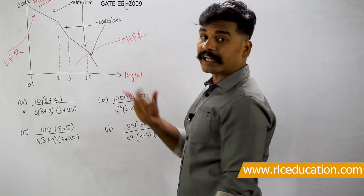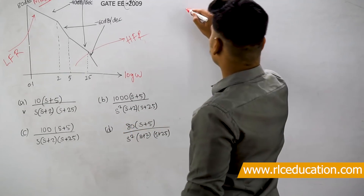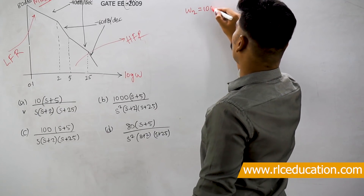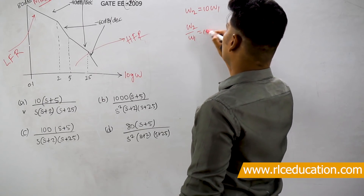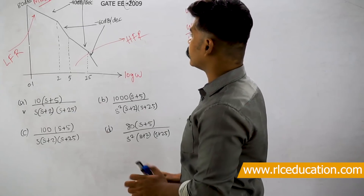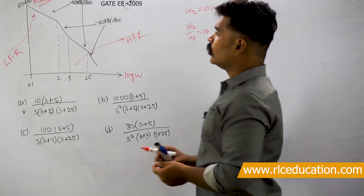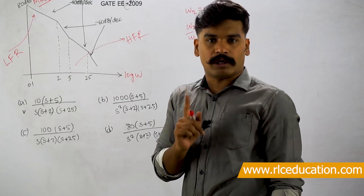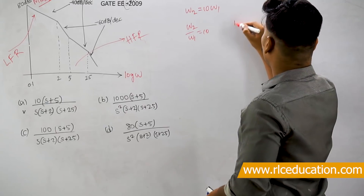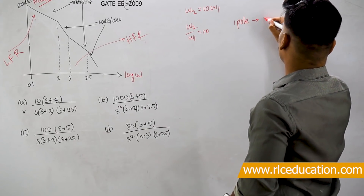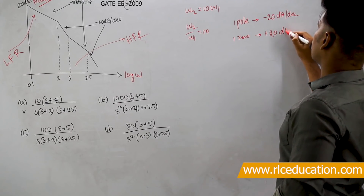We find the slope by looking at differences between decade frequencies. A decade frequency means omega2 equals 10 times omega1, so the ratio omega2/omega1 is one decade. We express slope as decibels per decade. Generally, one pole produces a slope of minus 20 dB per decade, and one zero produces a slope of plus 20 dB per decade.